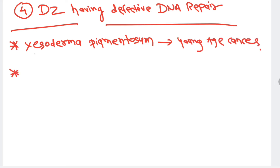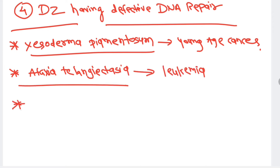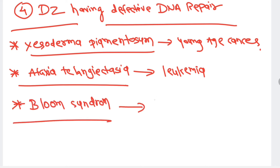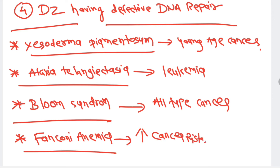The second DNA repair defect disorder is ataxia telangiectasia, which can lead to blood cancers such as acute and chronic myeloid leukemia. Third is Bloom syndrome, which can lead to development of all types of cancer. Fourth is Fanconi anemia, a congenital disorder with defective DNA repair that increases cancer risk. All four are autosomal recessive disorders.